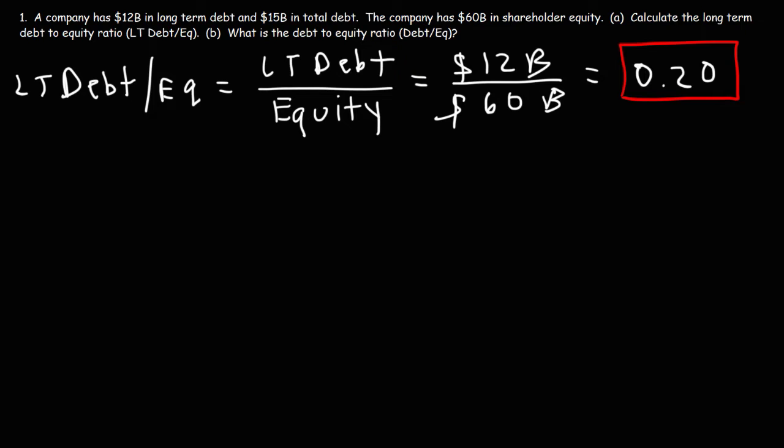So that is the long-term debt-to-equity ratio. When that number is less than 1, that's a good thing. If the number is greater than 1, it indicates that the company has a lot of debt.